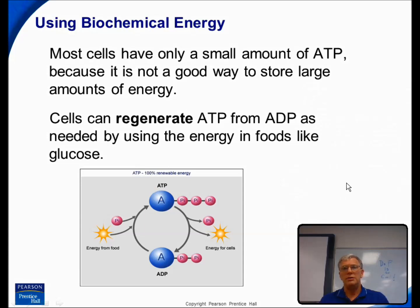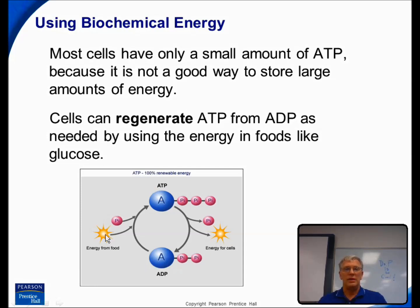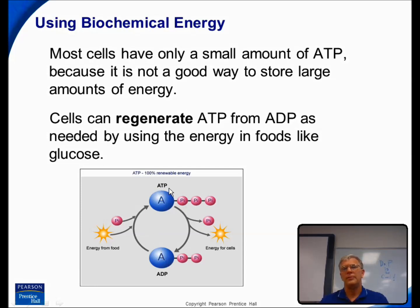Although ATP is a great energy source, it's not a great way to store large amounts of energy. But fortunately, ATP can be regenerated rather quickly. There's a continuous cycle of ATP breaking off a phosphate, releasing that energy for energy needs within the cell, and then ADP having that phosphate reattached from energy gained from food sources. This occurs in the mitochondria of cells through a process called cellular respiration that we'll look at during this unit. So ATP and ADP are constantly being recycled as energy is pulled out of ATP and ADP is recharged through our food sources.